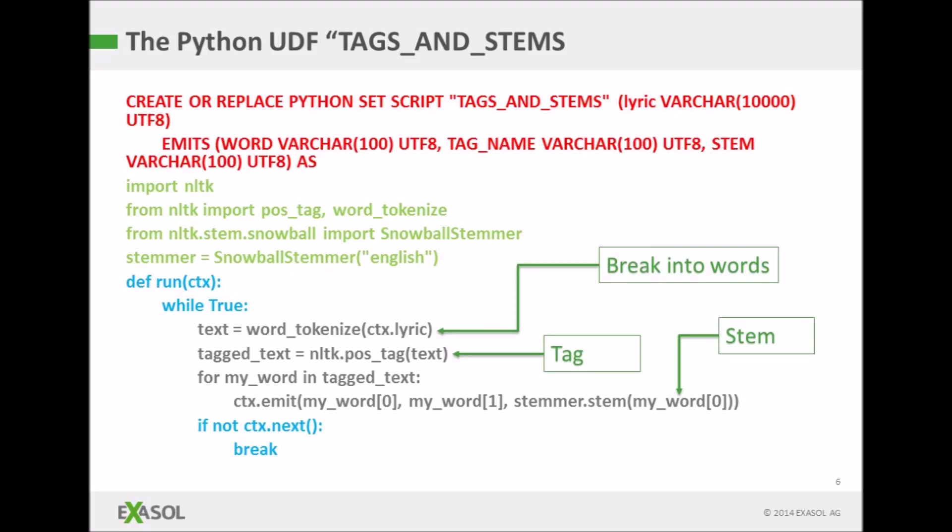The part in blue is just a loop which loops around all of the data that's given to it. The bit in black does all of the work — it breaks the text down into words, puts a tag on them depending on the part of speech, and then for each word works out which stem the word belongs to, and then emits the word, the tag, and the stem.